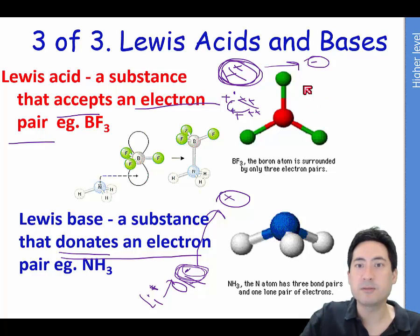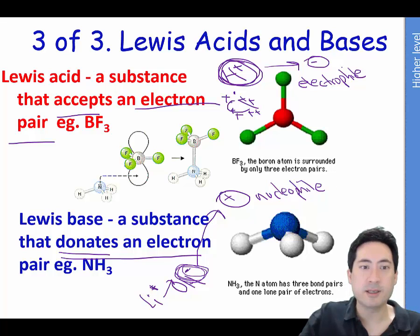I'll just write those in there: electrophile and nucleophile. That's how I remember which one's which. Now here is an example of how Lewis acids and bases are more powerful than the previous Arrhenius and Bronsted-Lowry theories.